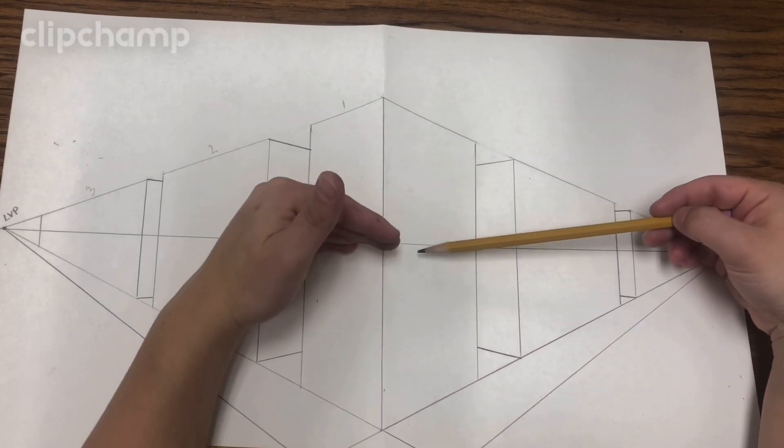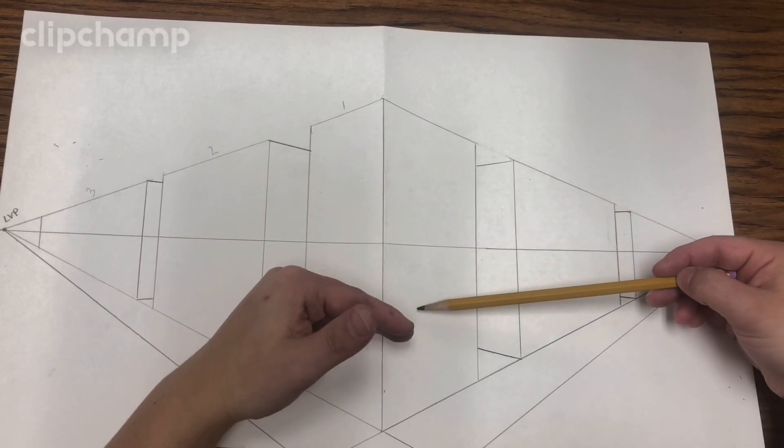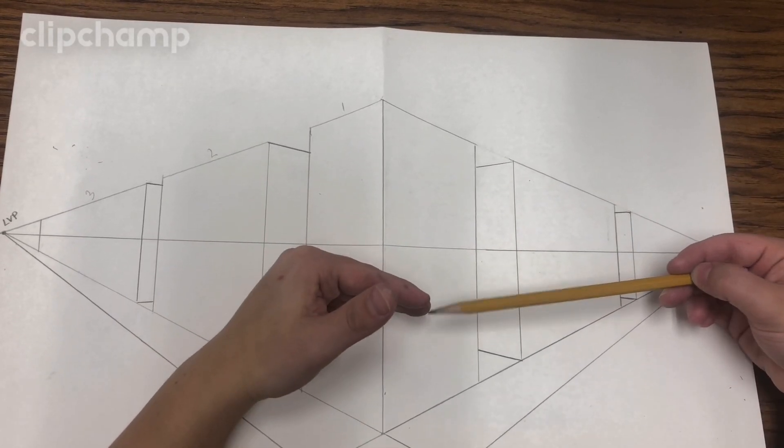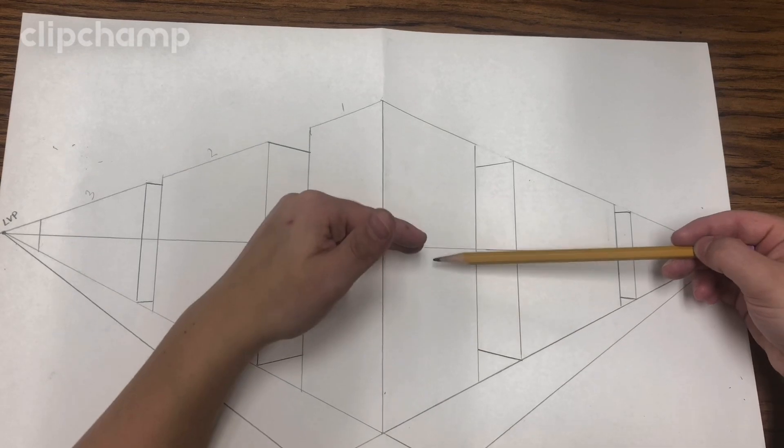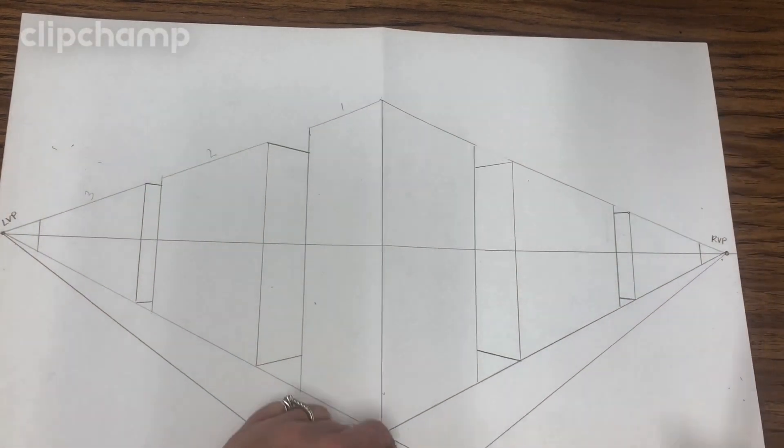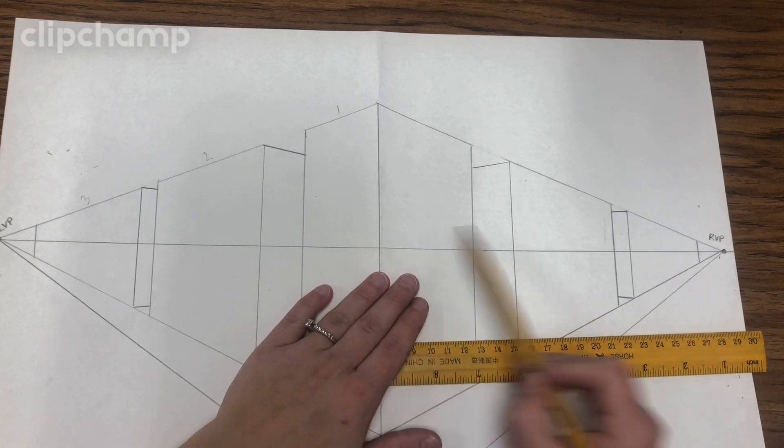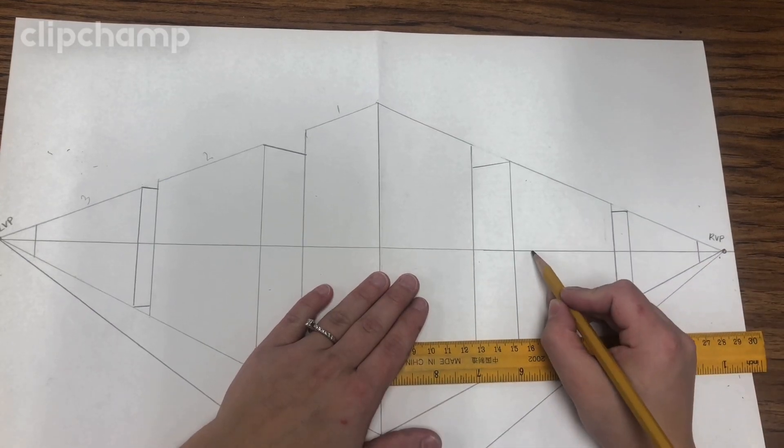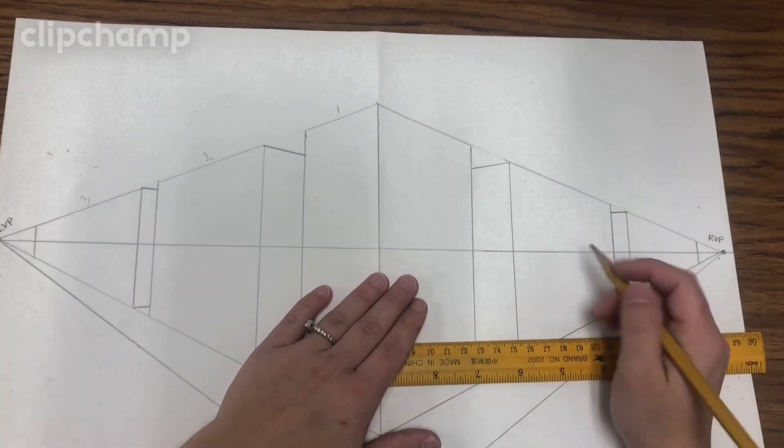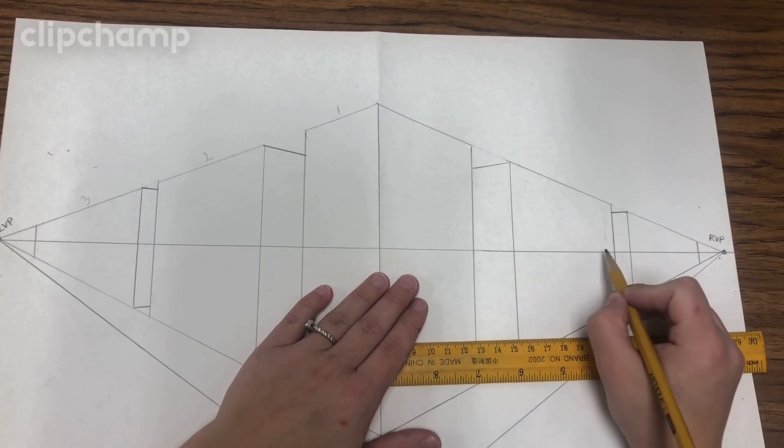If you find that your horizon line is lower on your buildings, it might be a good idea to use it for the door. If you find that it's higher, it's probably best to use it for your windows. So I'm just going to use the horizon line as the bottom line for my windows. So I don't have to draw any extra lines.